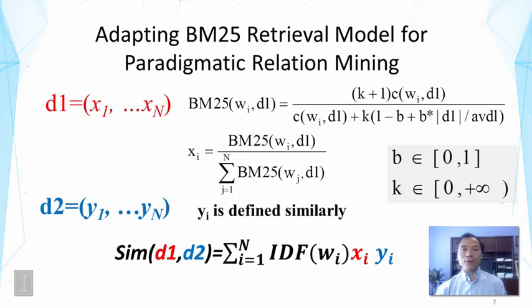So how can we add these heuristics to improve our similarity function? Well, here's one way, and there are many other ways that are possible. But this is a reasonable way where we can adapt the BM25 retrieval model for paradigmatic relation mining. So here we define, in this case, we define the document vector as containing elements representing normalized BM25 values. So in this normalization function, we see we take sum over sum of all the words, and we normalize the weight of each word by the sum of the weights of all the words.